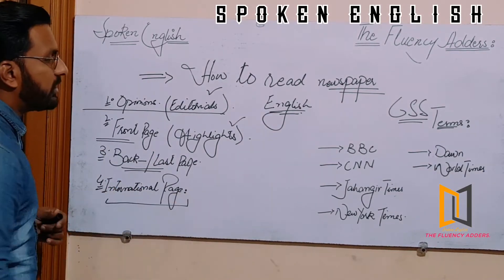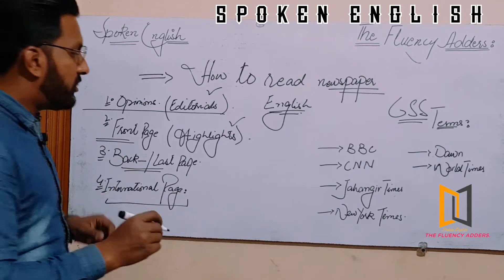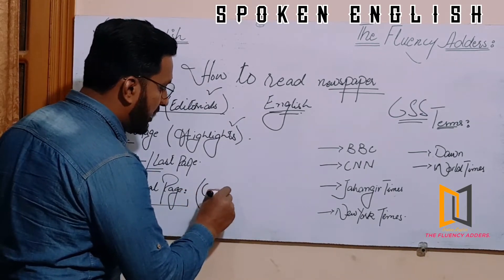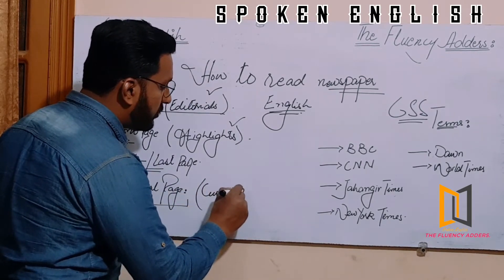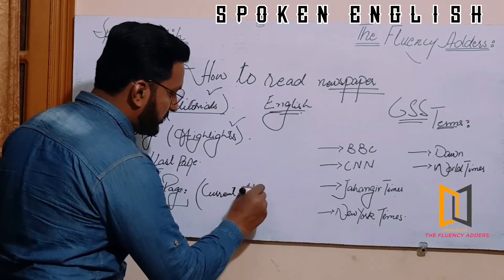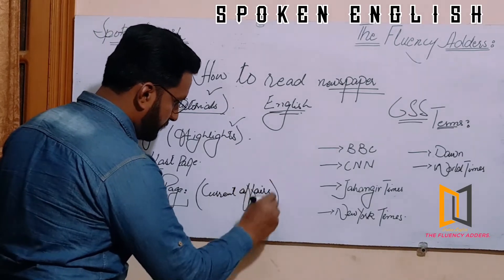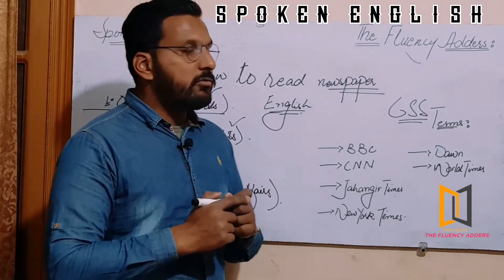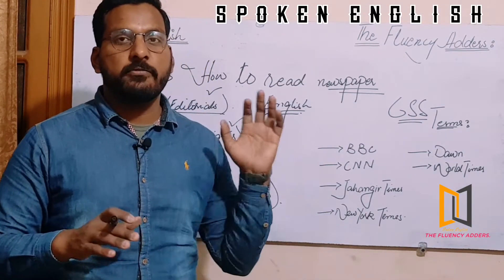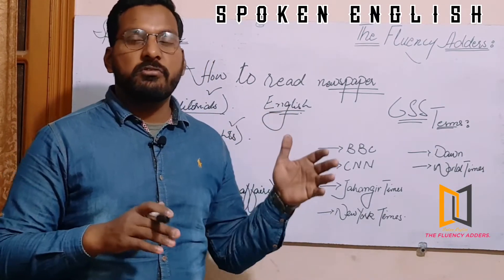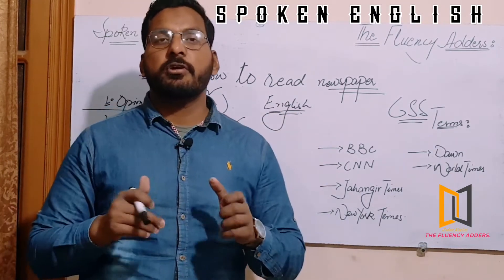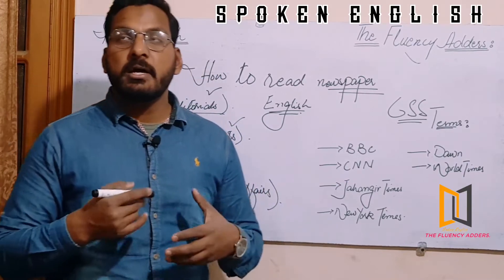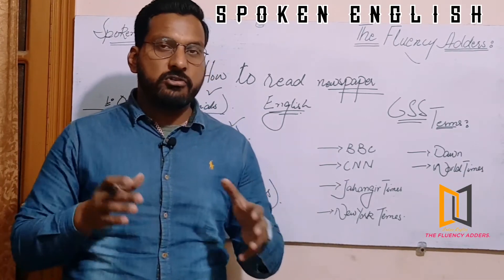Number four: always go for the international page, because it includes news about current affairs. It will help you with current affairs. This is a very important point — go through that page carefully. The main question is also about how to read the newspaper and which type of newspaper you should go for.